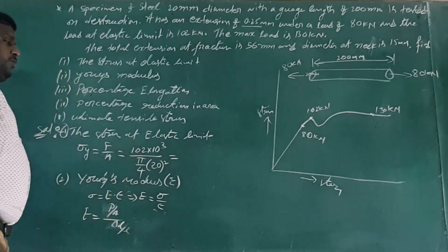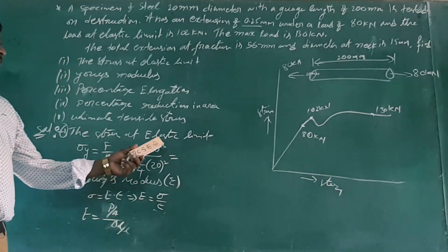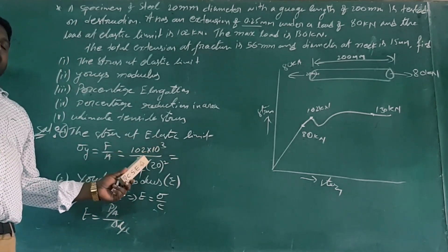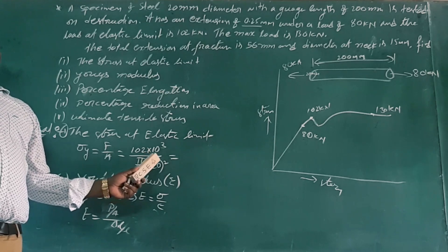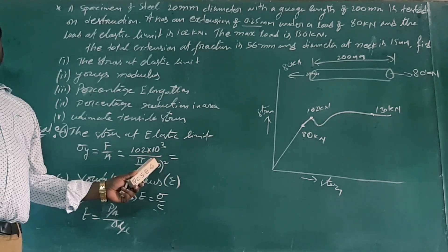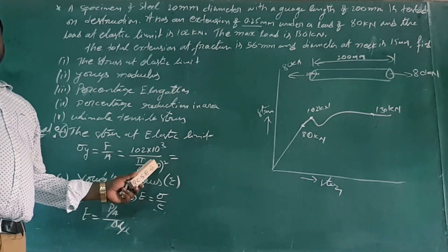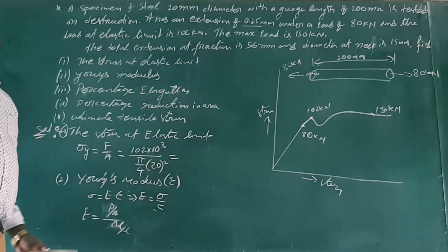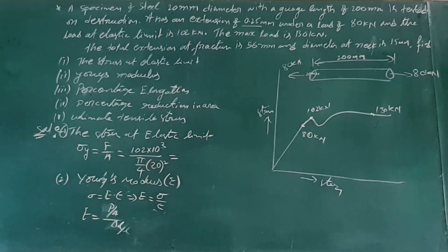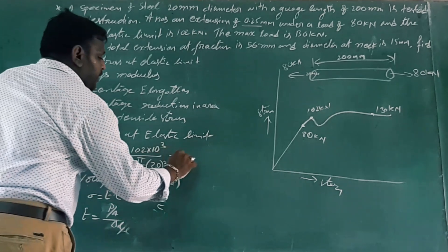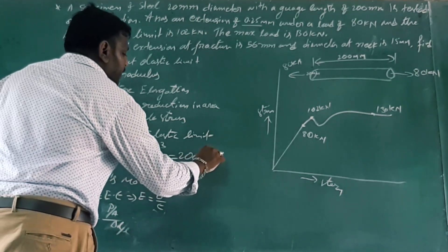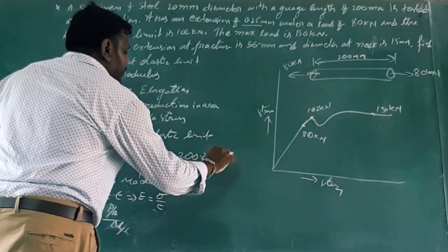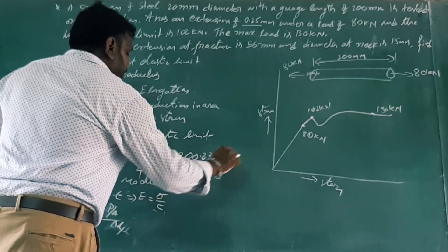Substituting values: E equals 102 × 10³ divided by (pi/4 × 20²), multiplied by 200 divided by 0.25. The calculation gives E equal to approximately 0.27 × 10⁵ newtons per square mm — that is, the modulus of elasticity.